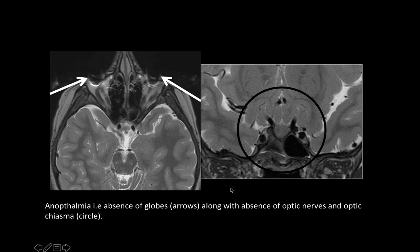In adults we have choroidal melanoma and metastasis. Common to both includes vitreous hemorrhage, retinal or choroidal detachments, foreign body, orbital pseudotumor, and phthisis bulbi. This child had anophthalmia — complete absence of the globe as well as the optic nerves. The extraocular muscles are still seen. On coronal T2-weighted image, there is complete absence of the optic chiasm.